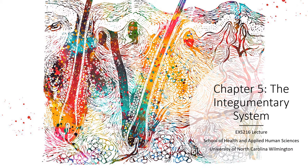Welcome to chapter 5, the integumentary system. This is the last chapter for your unit 1 exam, which will consist of chapters 1 through 5. This is the chapter where we begin to get into each body system. We will talk about the structures that comprise each system as well as their functions — basically the anatomy and the physiology.